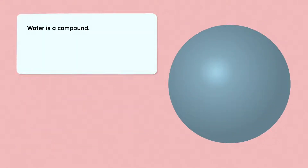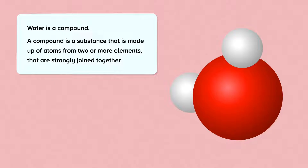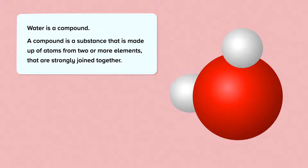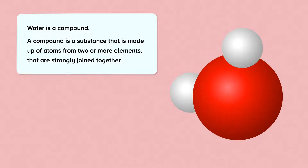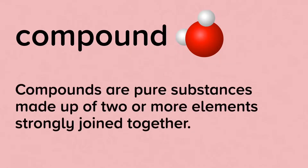Water is a compound. A compound is a substance that is made up of atoms from two or more different elements that are strongly joined together. We can see here that each water particle is actually made up of three atoms, and that they are from different elements — one is from an element called oxygen, and the other two are from an element called hydrogen. Compounds are pure substances made up of two or more elements strongly joined together.